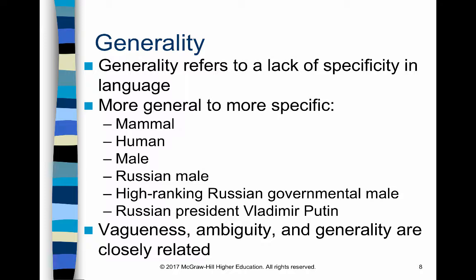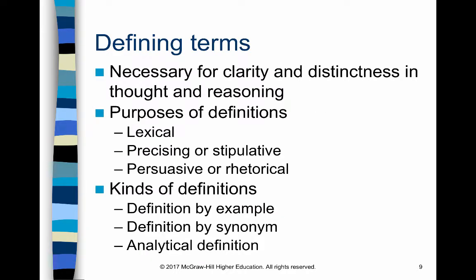Vagueness, ambiguity, and generality are obviously closely related. While we will do exercises in class to make sure you understand the difference between them, in real life it's more important that you're able to tell when language simply isn't clear enough and ask questions like, 'What exactly do you mean by that?' In order to be an effective speaker and writer, you need to understand the different purposes and kinds of definitions and to be able to use them well.